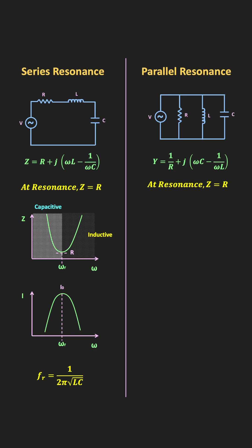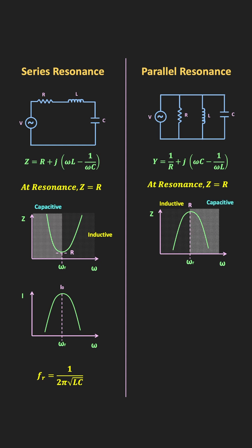For this parallel RLC circuit, this is how the impedance curve will look like. Below the resonant frequency, this parallel RLC circuit will be inductive in nature. While beyond the resonant frequency, the circuit will be capacitive in nature.